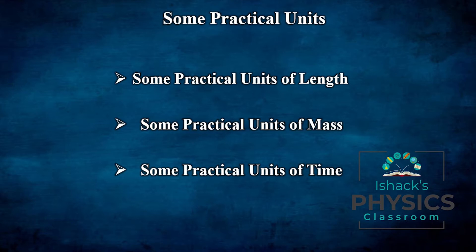However, SI units are not always convenient to use. For example, the distance between the Sun and Earth expressed in meters becomes a very large value. Similarly, the mass of the solar system, or the mass of an electron and proton expressed in kilograms, becomes impractical to work with in everyday situations.